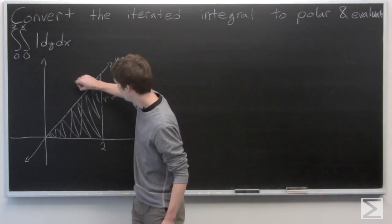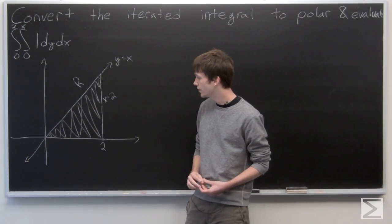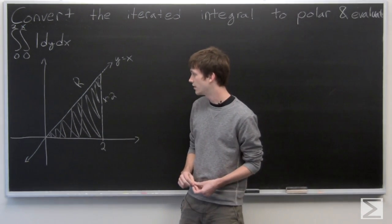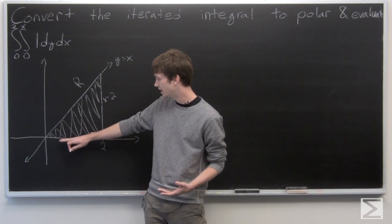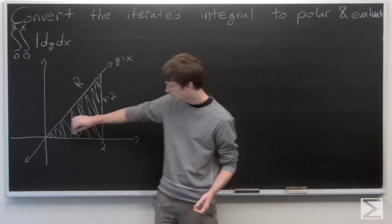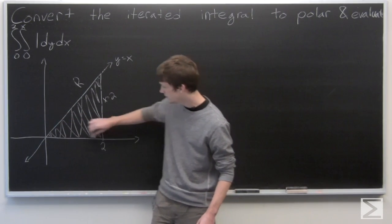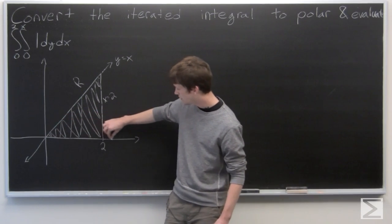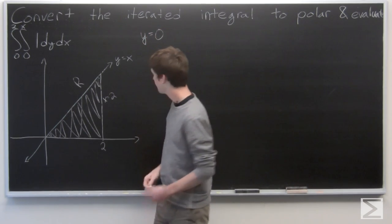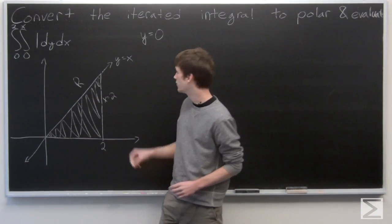This is our region R that we're going to be integrating over, and we want to convert it into polar coordinates. If we look at how we would range our theta — our angle — we see that we want a lower limit along the equation y equals 0, just along the x-axis, and we want our theta to be greater than that.